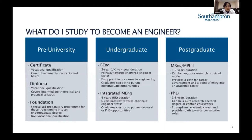What do you study to become an engineer? At pre-university level, a certificate provides vocational qualifications covering fundamental concepts and basics, qualifying you perhaps as a junior technician rather than a full-fledged engineer. The diploma covers intermediate theoretical and practical syllabus and is also vocational-based. Alternatively, you can choose not to go into the vocational route.